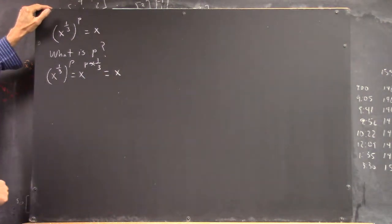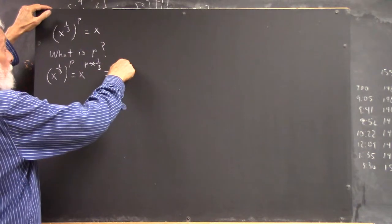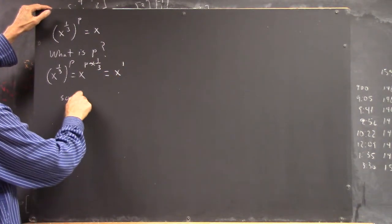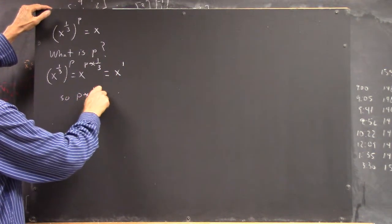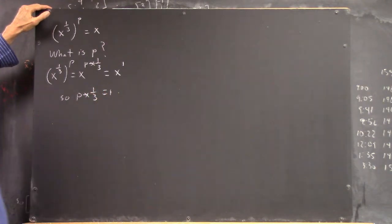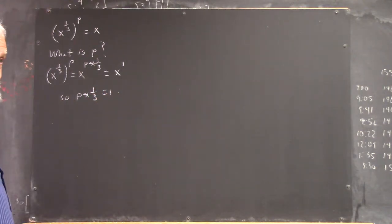And that should equal x, right? And of course, x is x to the 1. So p times 1/3 has to be 1, doesn't it? Right.